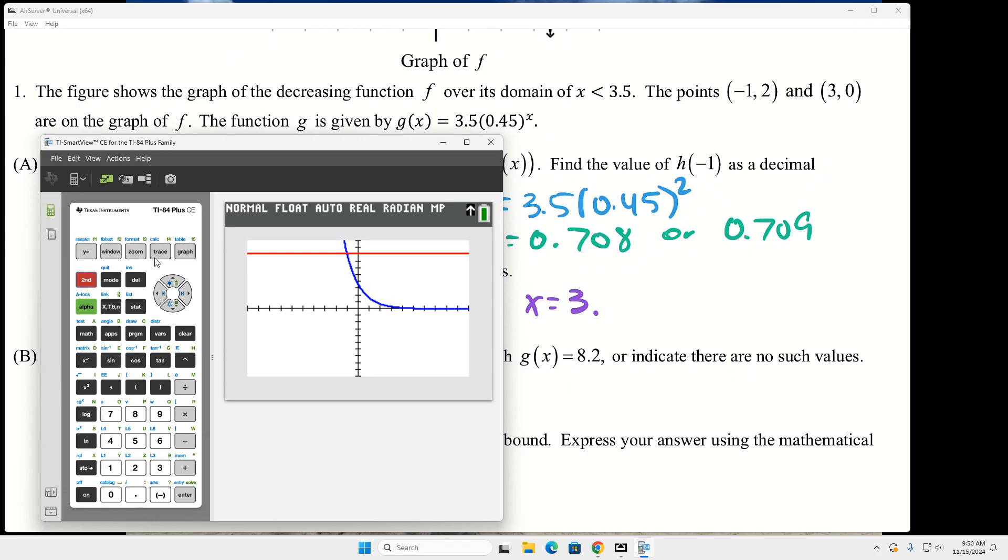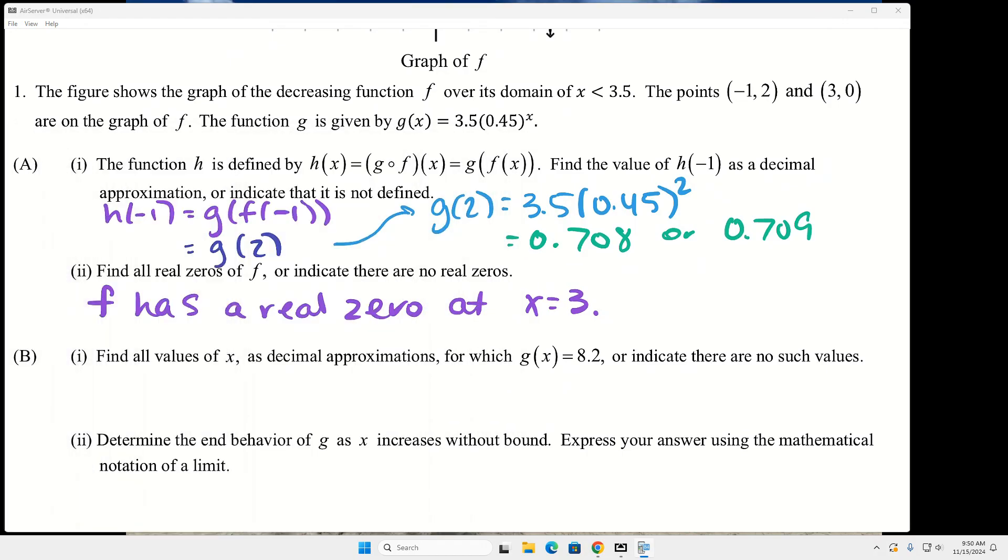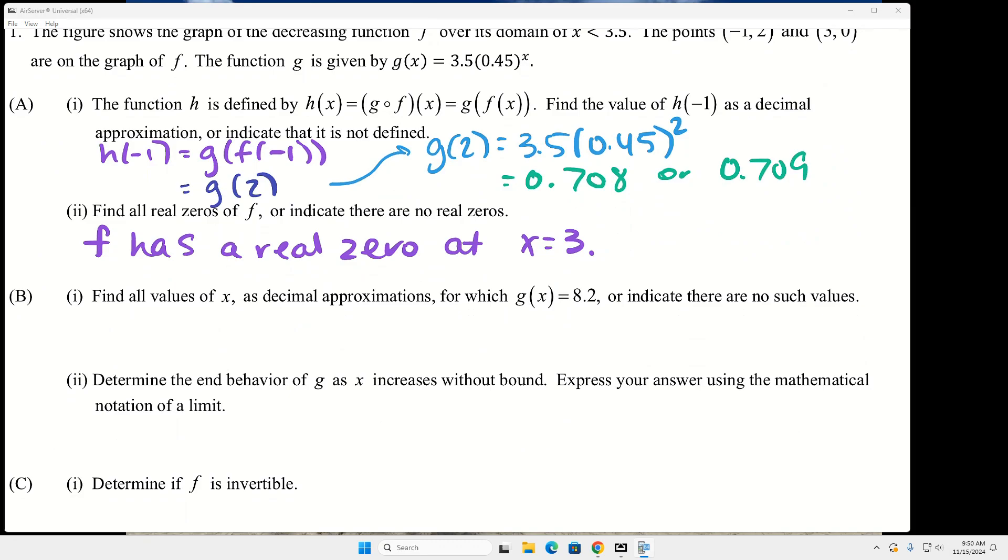So it's second, trace, and then number five, which is intersect. And then you get this little flashing cursor. If they only intersect one time, it's fine if you just hit enter three times. And then as long as this says intersection, then you can be accurate to three decimal places here. So I would write a statement similar to g of x equals 8.2 when x equals 1.066.